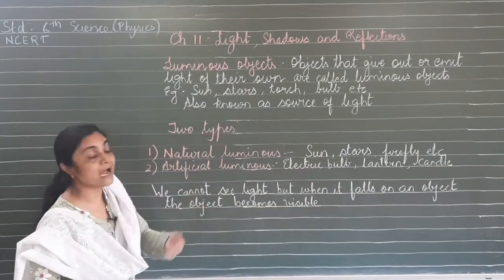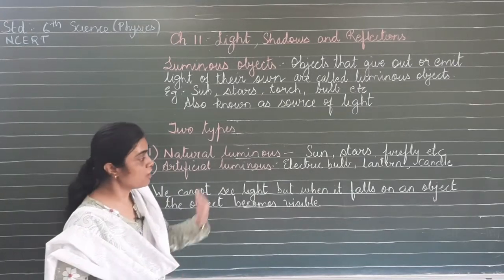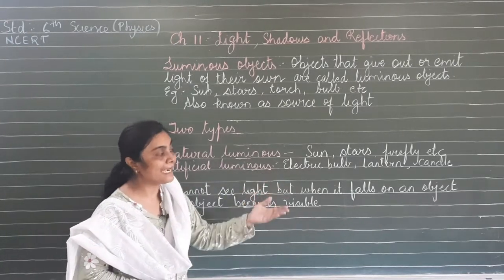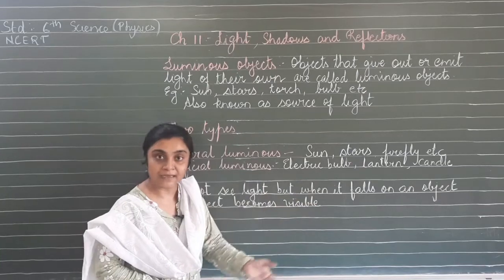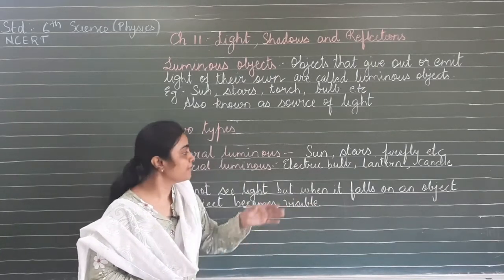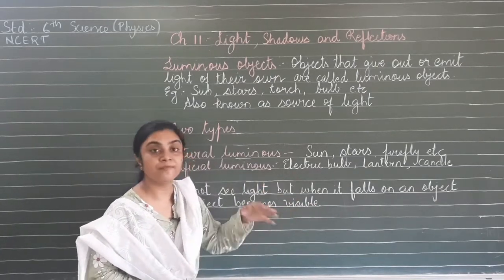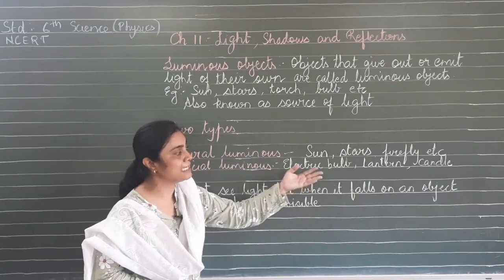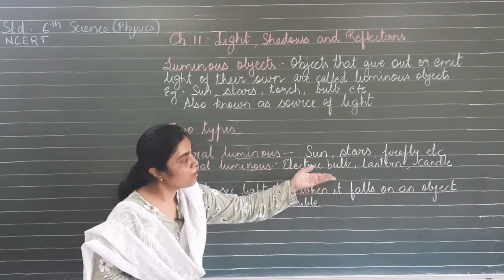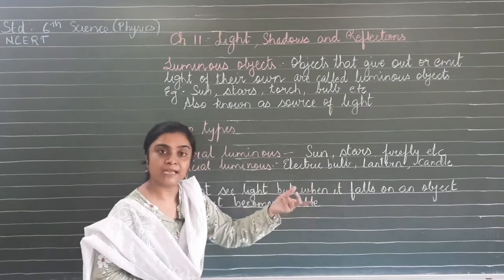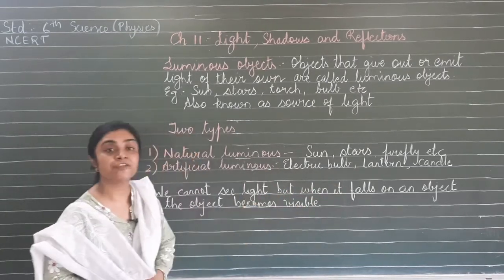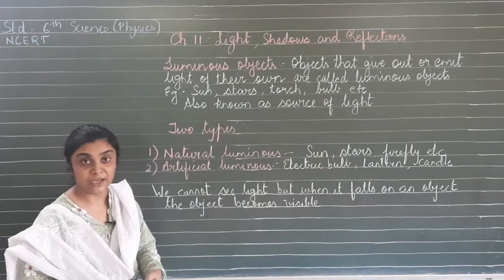Artificial luminous objects are man-made objects that emit light. Examples are electric bulb, lantern, candle, and torch. An electric bulb uses electricity, a lantern uses kerosene, and a candle uses wax. These are all artificial luminous objects.